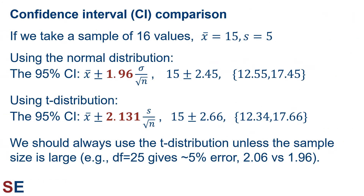Let's compare our two different confidence intervals using the normal distribution and using the t distribution. For both, we have a sample mean of 15 and a standard deviation value of 5. If we knew the population standard deviation and used the normal distribution, it's 1.96 standard errors above and below the sample mean. If we have to estimate the population standard deviation from the sample and use the t distribution, it's 2.131 standard errors above and below. In the real world, the first situation is unrealistic, so the t distribution is what we should always be using when calculating confidence intervals.